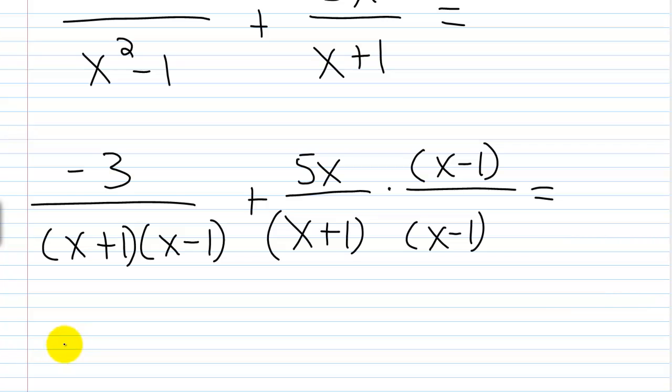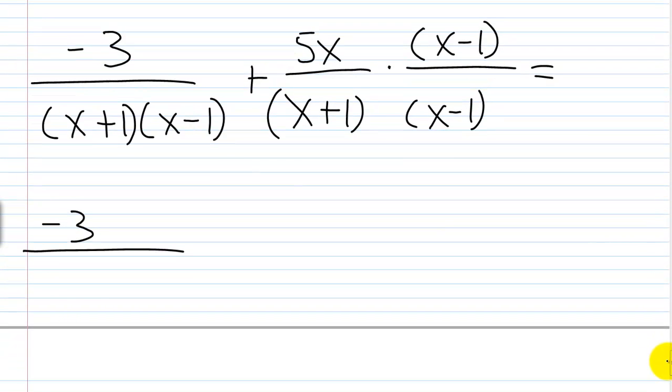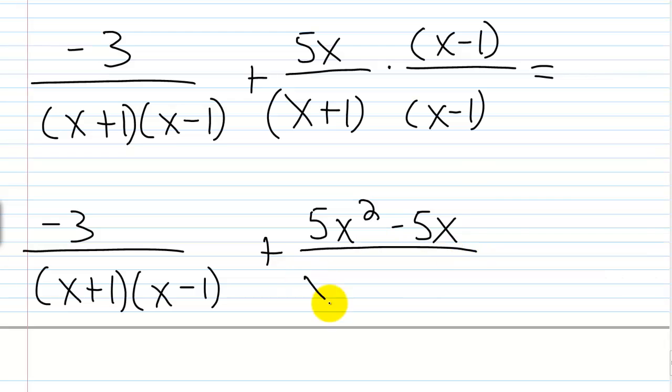So what is that going to give me? I'll have negative 3 over x plus 1 times x minus 1 plus, if I do 5x times x, that's 5x squared. And if I do 5x times negative 1, that's minus 5x. And again, over x plus 1 times x minus 1.